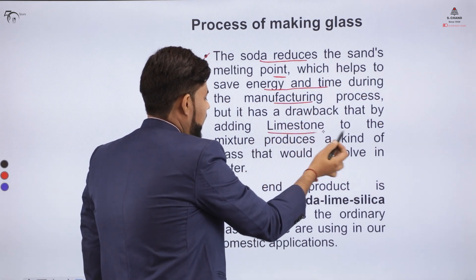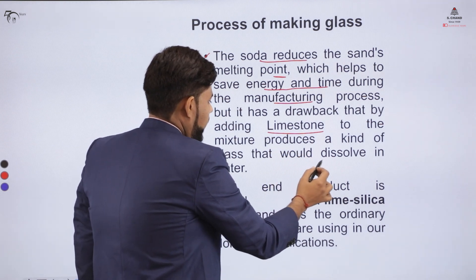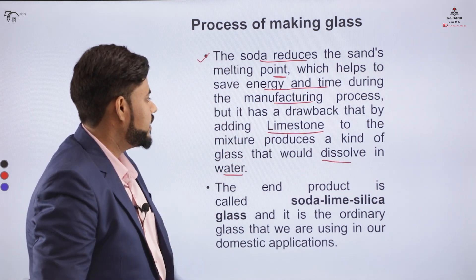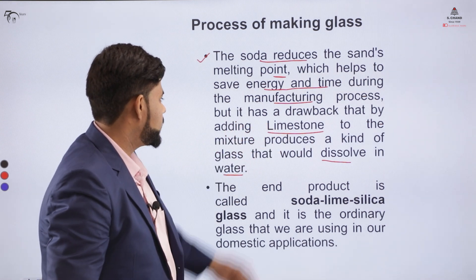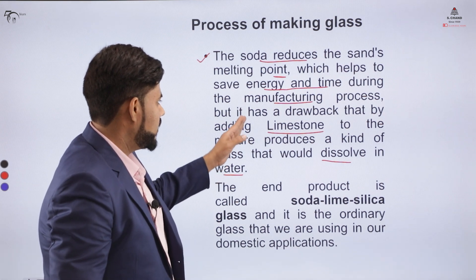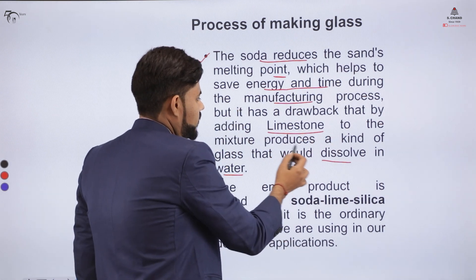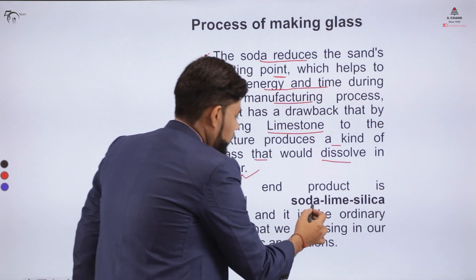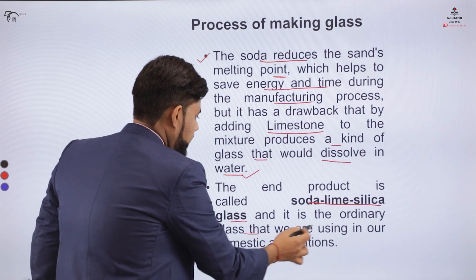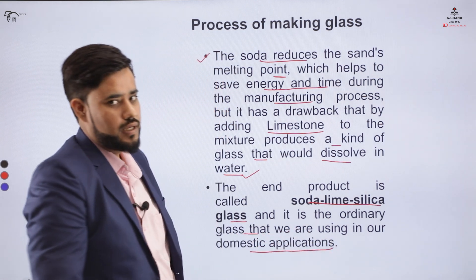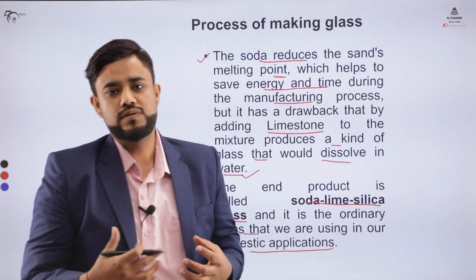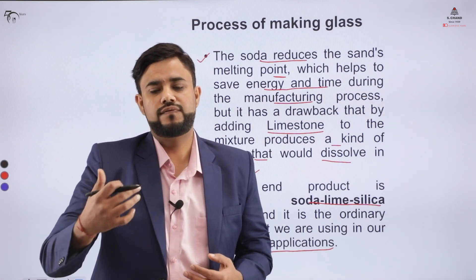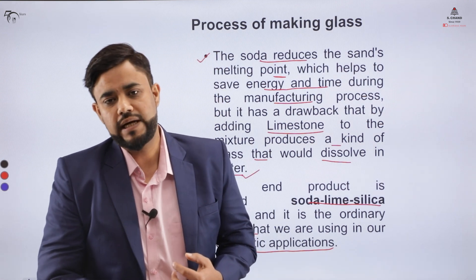However, a major drawback of adding limestone is that it causes the glass to dissolve in water. Adding limestone to the mixture produces a kind of glass that would dissolve in water. The end product is basically called soda lime silica glass, and it is the ordinary glass that we use in domestic applications.